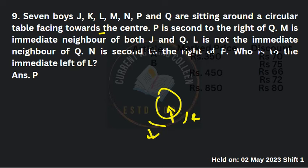Tenth question is a seating arrangement: P is second to the right of Q. M is the immediate neighbor of both J and Q. L is not the immediate neighbor of Q and is second to the right of P. The question asks who is to the immediate left of L. This type of question was covered in the first session and can be solved by arranging the positions systematically.